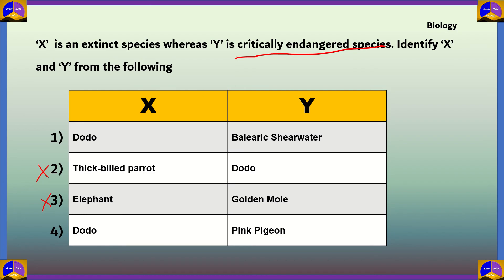Differentiating between options 1 and 4: option 4 says Dodo is extinct (correct), but lists Pink Pigeon as critically endangered — this is incorrect because the Pink Pigeon species is actually extinct. So option 1 is the correct answer: X is Dodo (extinct species) and Y is Balearic Shearwater (critically endangered species).